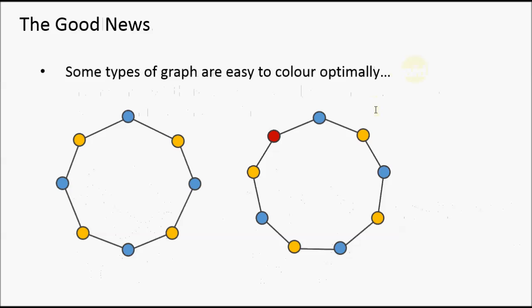However, that doesn't mean that we can't find the optimal solutions to all graphs. Some graphs we can solve quite easily. So this graph on the left, this is what we call a cycle graph for obvious reasons. And you can see, just by alternating the colors, we can easily color this using just two colors. And it would be easy to design an algorithm that would be able to identify whether a given graph was a cycle graph and color it as such.